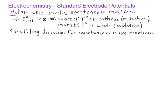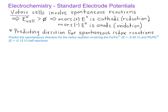Let's look at an example using the iron/iron 2+ and lead/lead 2+ half-reactions. The first thing we'll want to do is identify the electrode potentials for each half-reaction. From Table 18.1, the iron/iron 2+ half-reaction has an electrode potential of negative 0.45 volts, and the lead/lead 2+ half-reaction has an electrode potential of negative 0.13 volts.